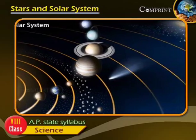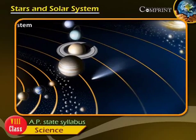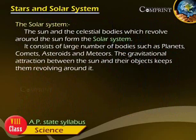Comets, asteroids and meteors. The gravitational attraction between the Sun and these objects keep them revolving around it.